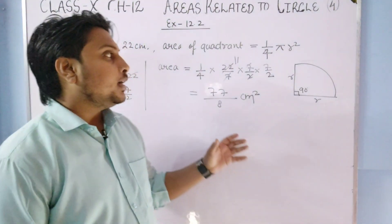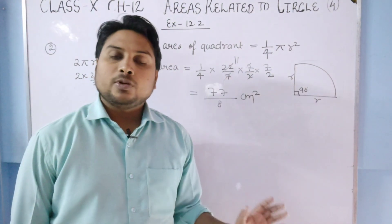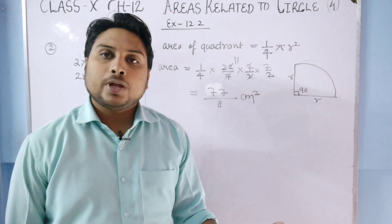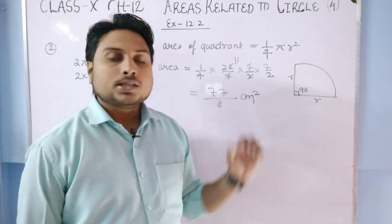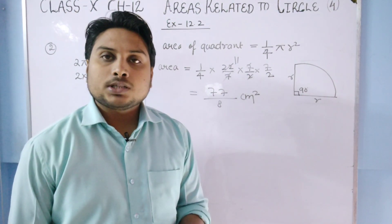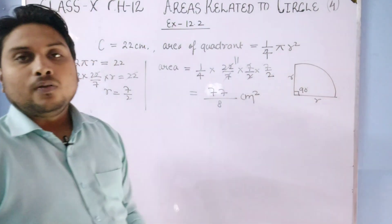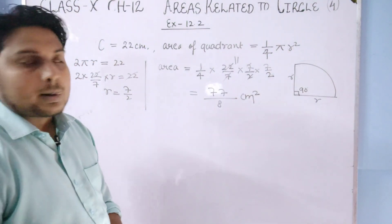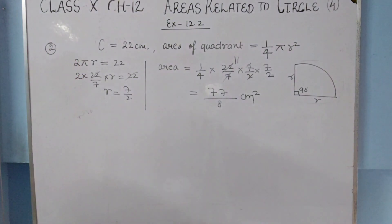The key understanding here is that the area of a quadrant is (1/4)πr² because using the sector formula theta/360 × πr² with theta = 90 degrees gives 90/360 = 1/4. Pause the video and note it down.